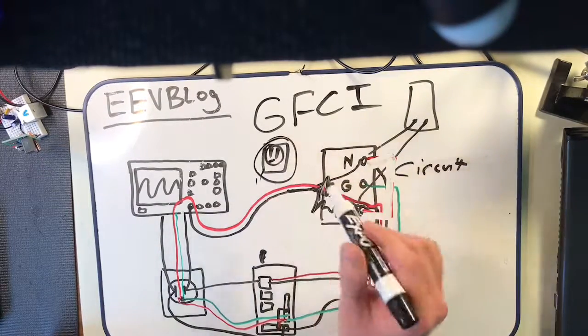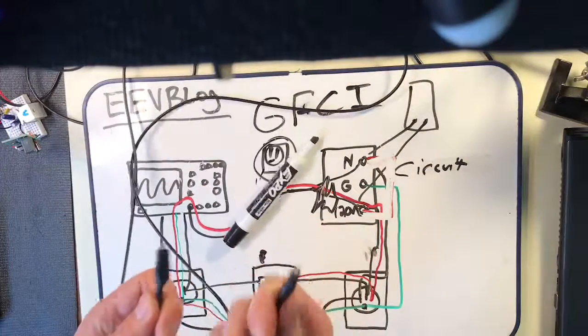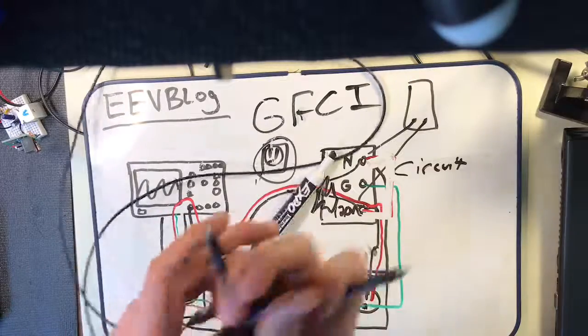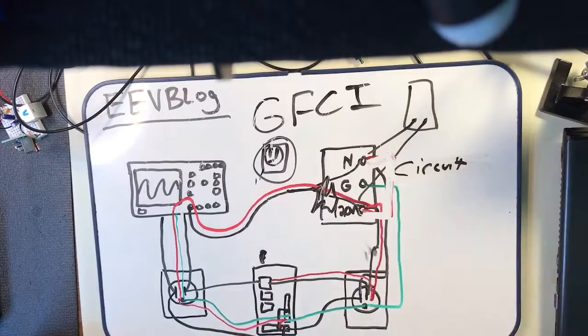This will not protect you against things like if you have two probes connected to different points in your circuit, these will still carry current. It's not going to detect that. What it will detect is an accidental connection between live and ground.